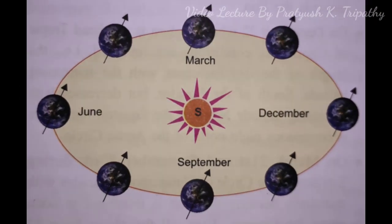Two points must be kept in mind. The Earth's axis keeps a fixed angle with the plane of the ecliptic and secondly the axis always points to the same direction during the period of its revolution.